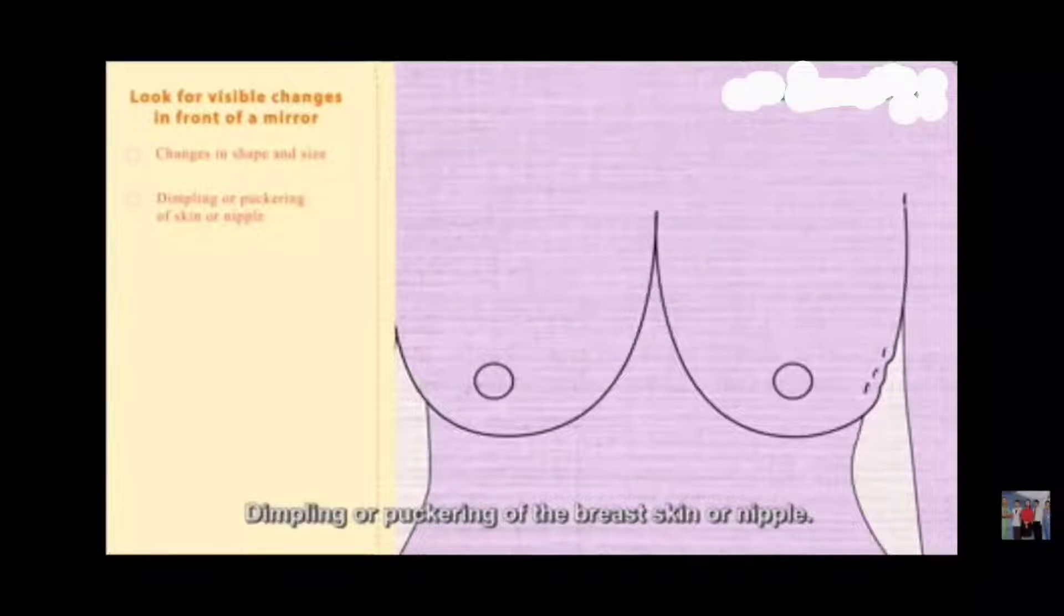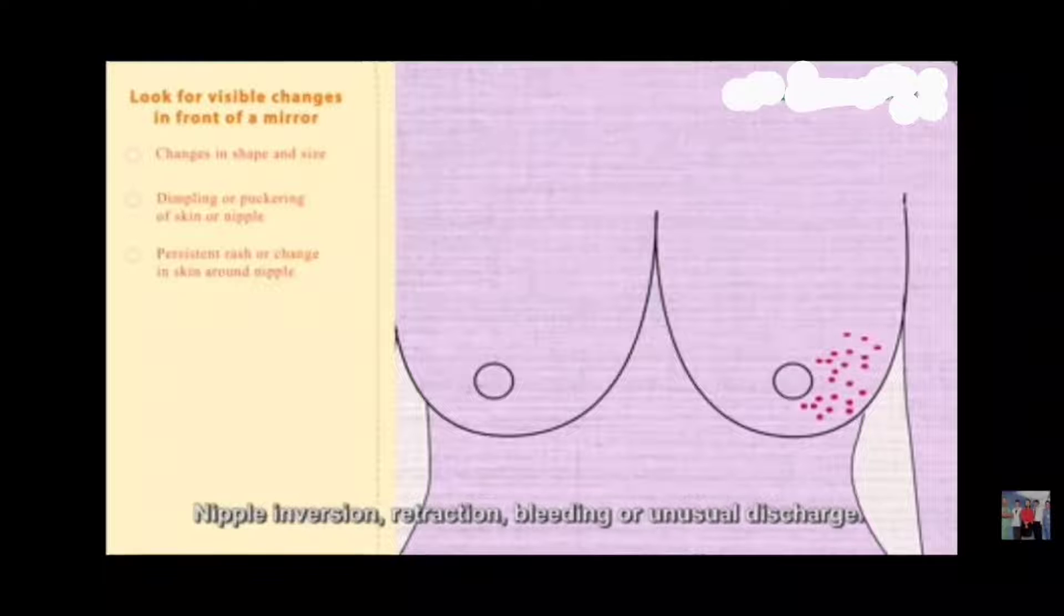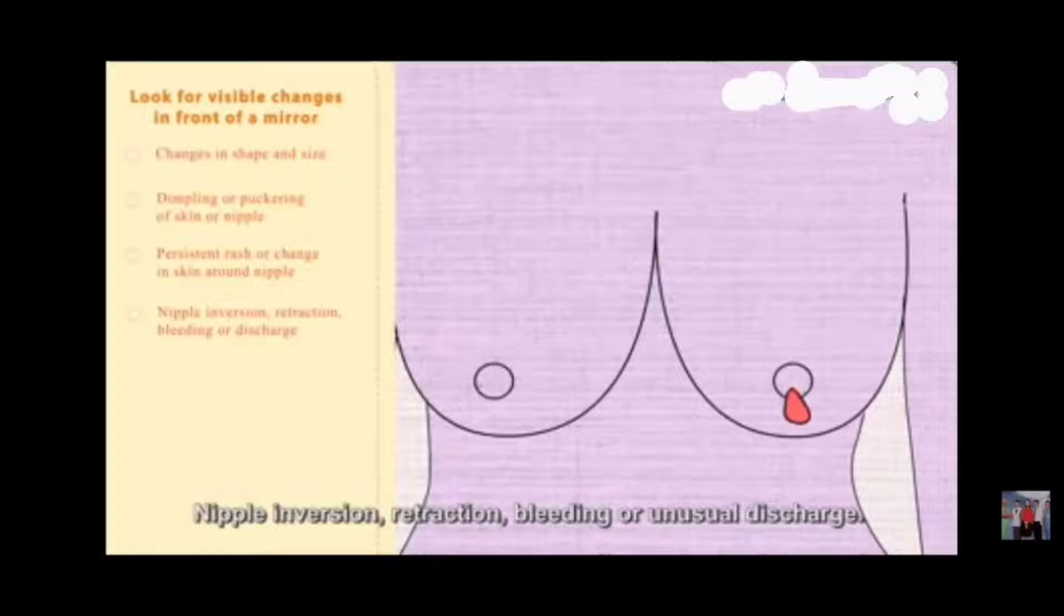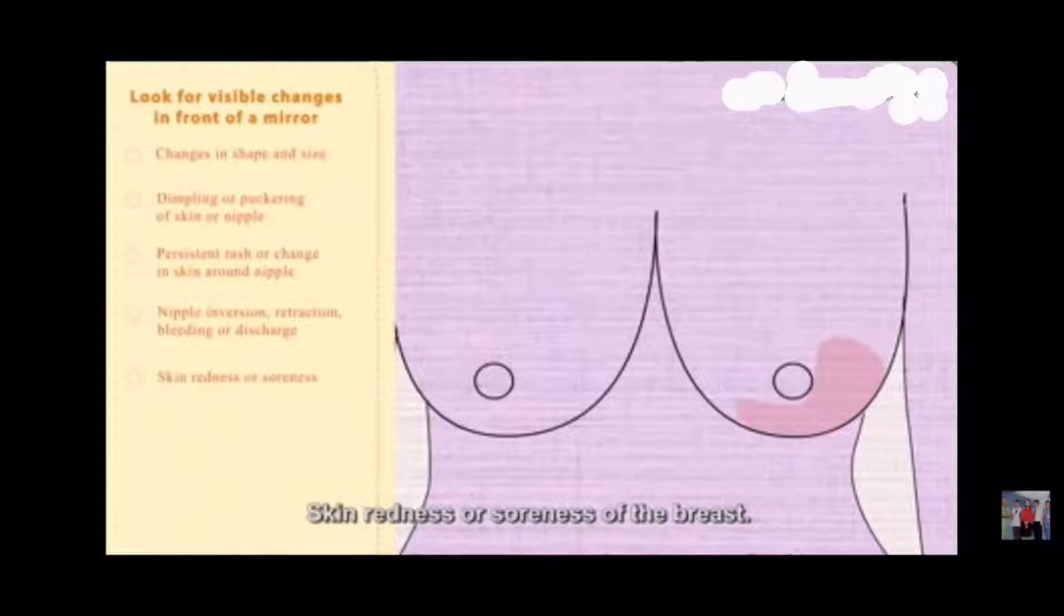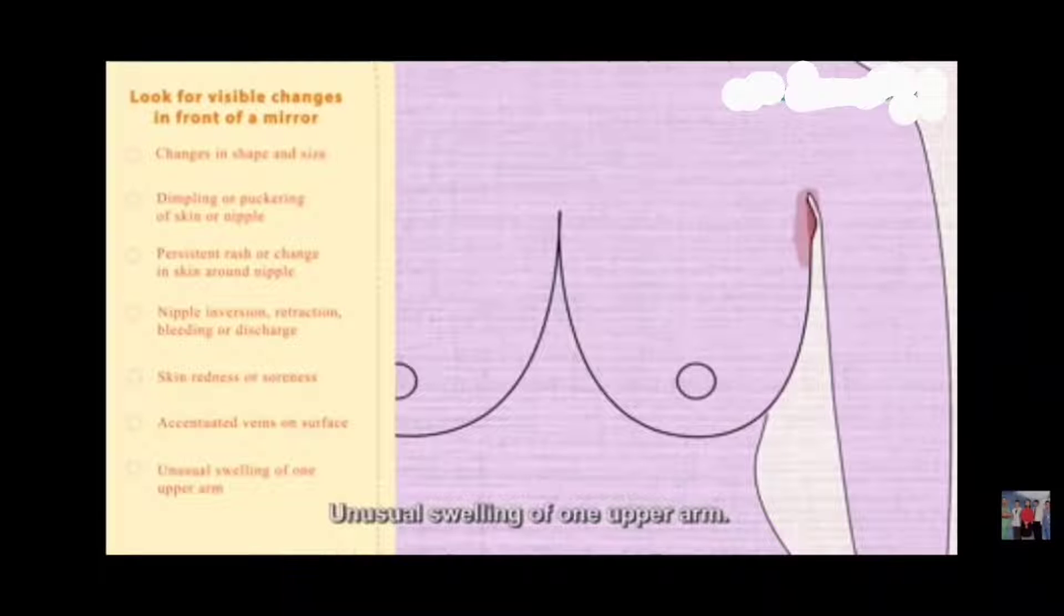Changes in the shape and size of one breast. Dimpling, puckering, or buckling of breast skin or nipple. Persisting rash or change in the skin around the nipple. Nipple inversion, retraction, bleeding, or unusual discharge. Skin redness or soreness of the breast. Accentuated veins on the surface of the breast or unusual swelling of one upper arm.